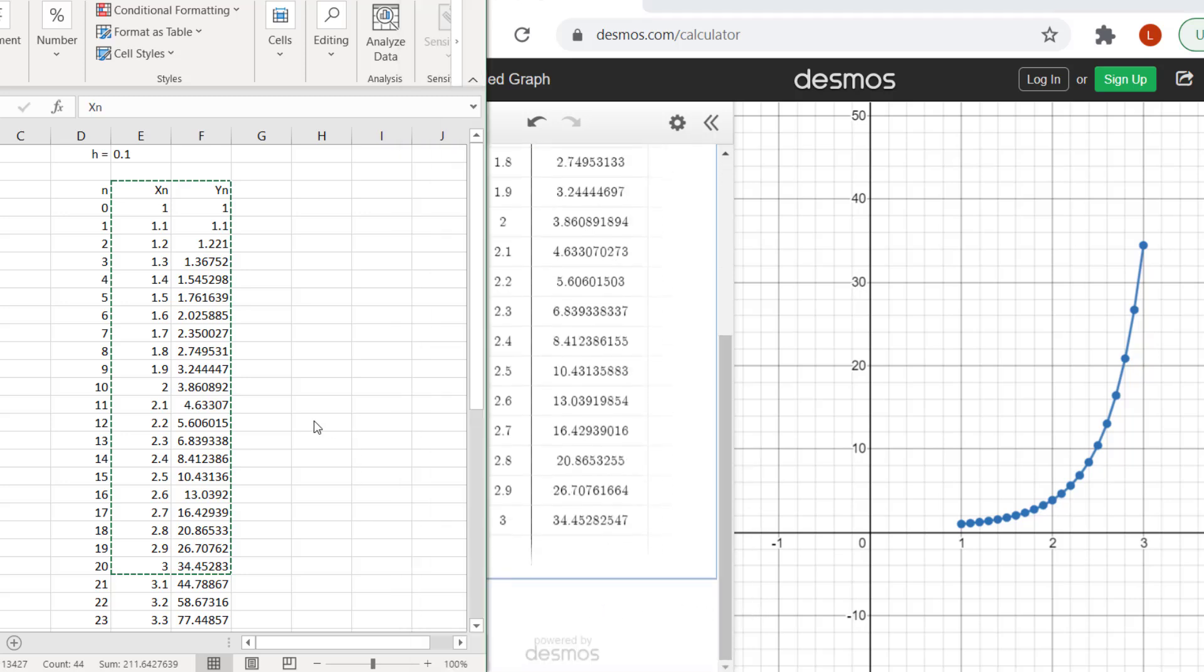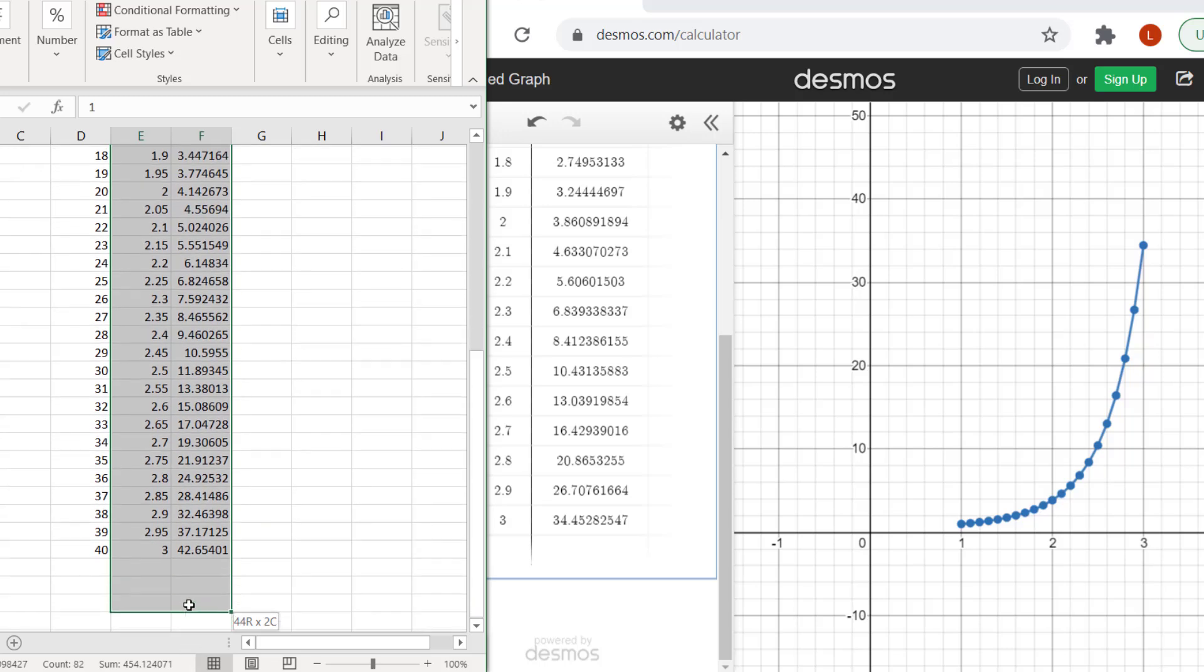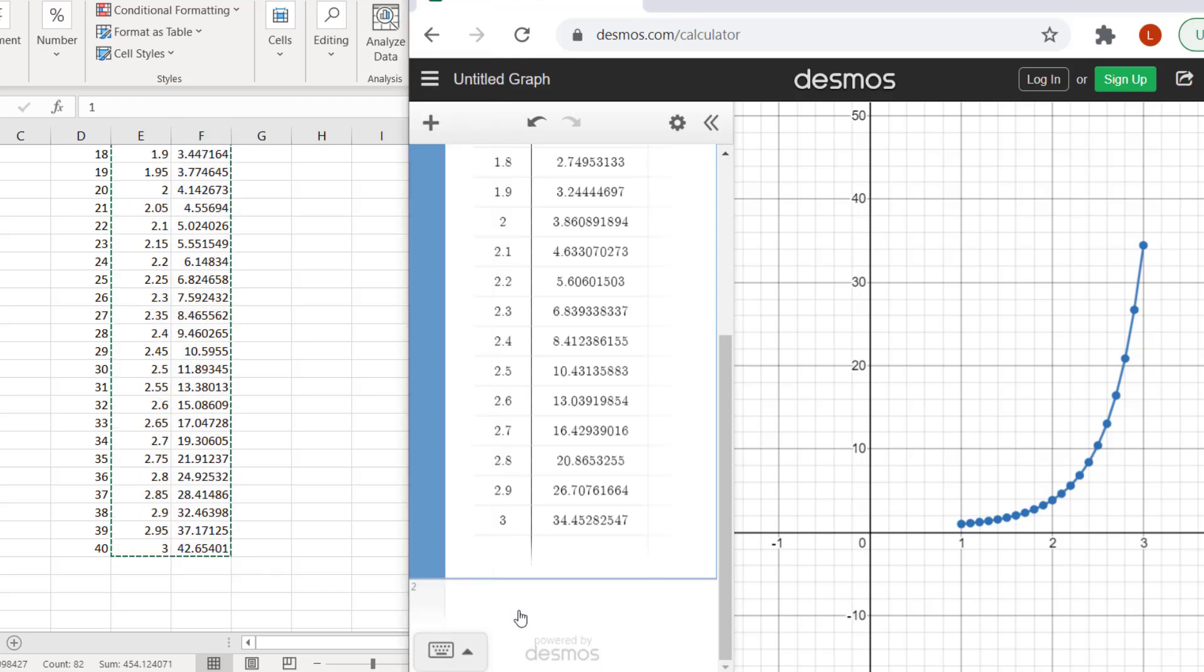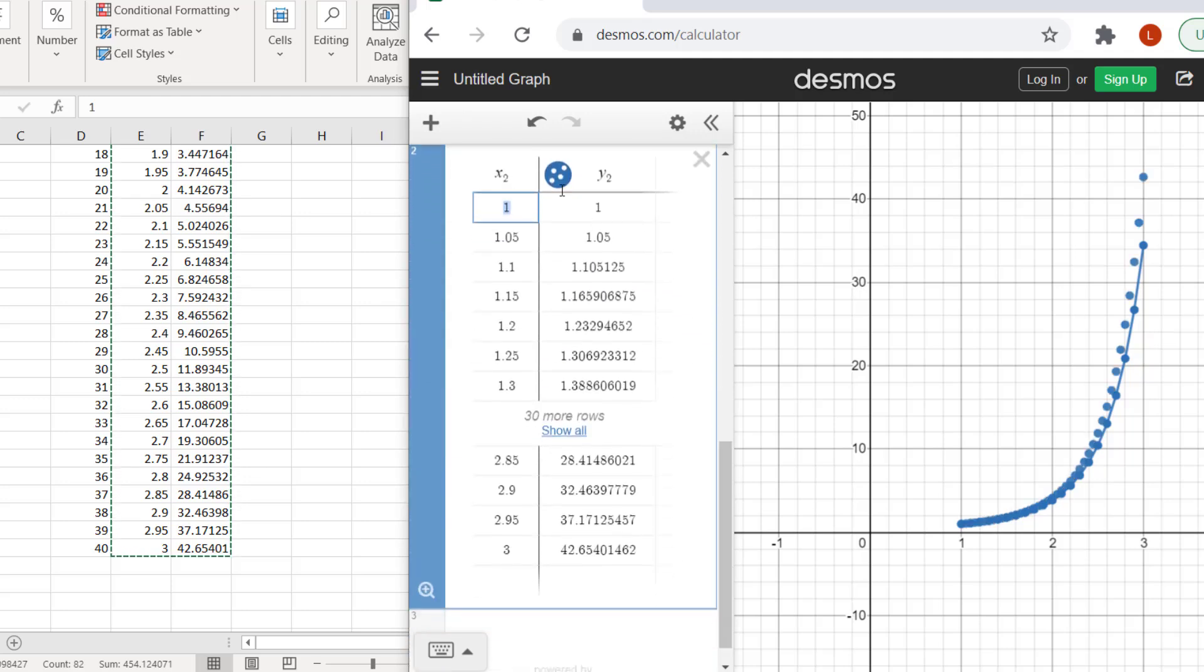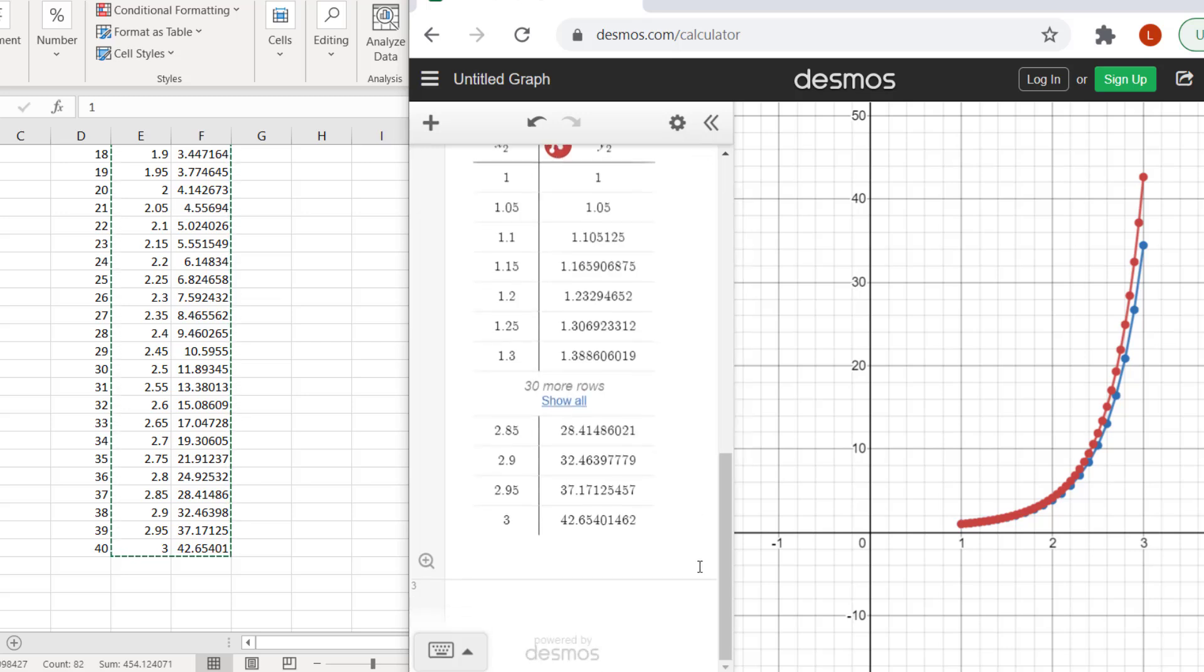Now we go back to Excel and change h to 0.05. Select the x and y values. I still want to go from x equals 1 to x equals 3, but this takes twice as many points as it took last time because the points are only half as far apart. Control C to copy. Then go back to Desmos and use Control V to paste these points into the second line. Left click and hold to get the menu. I'll make these points red with maximum brightness and connect them with line segments. The red dots are the Euler's method approximation using h equals 0.05.